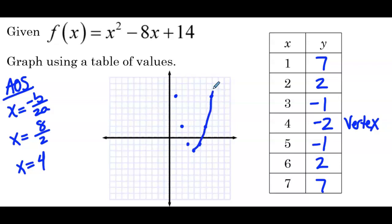We connect our points to create the parabolic curve. There are still 2 x-intercepts. 4 + √2 ≈ 5.414, which is approximately where that x-intercept occurs, and 4 − √2 is approximately between 2 and 3.